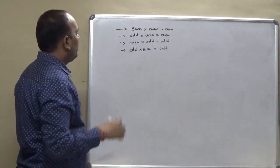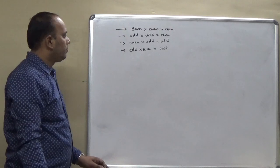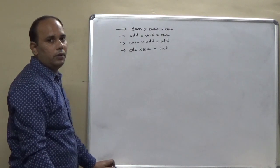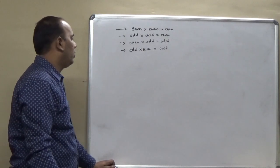So, if we are multiplying the same type of signal, then you will get the even. And if we are multiplying the one even and the one odd, then you will get the odd.